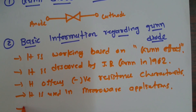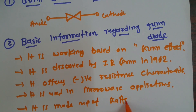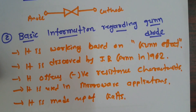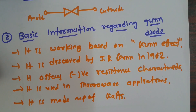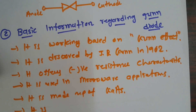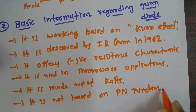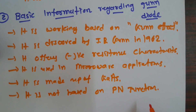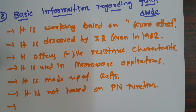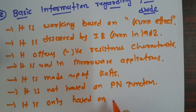The GUN Diode is made up of Gallium Arsenide. Looking at its structure, it is not a normal PN junction diode — it is not based on a PN junction. Its internal structure shows it is made up of only N-type layers: some highly doped layers called N-plus, and a lightly doped layer referred to simply as N.